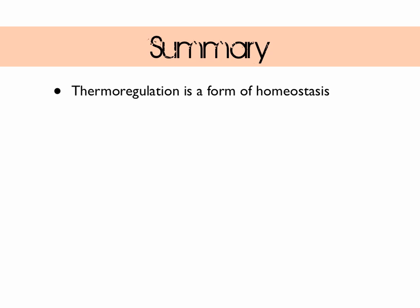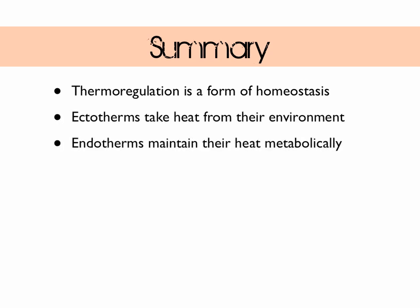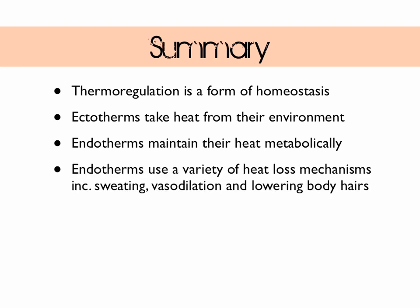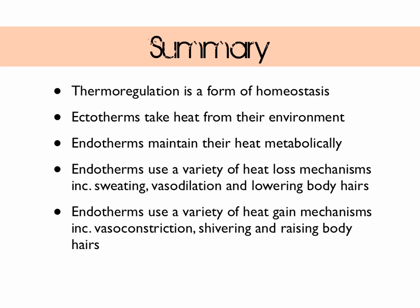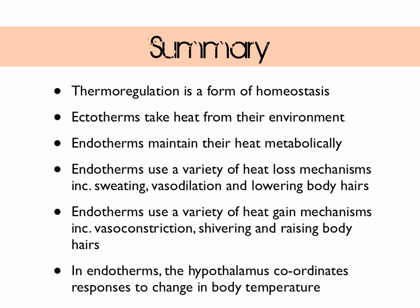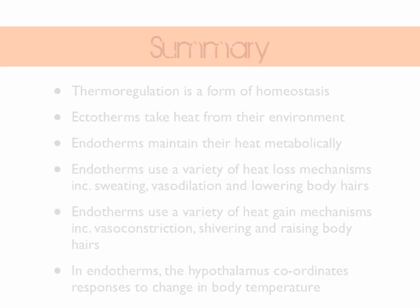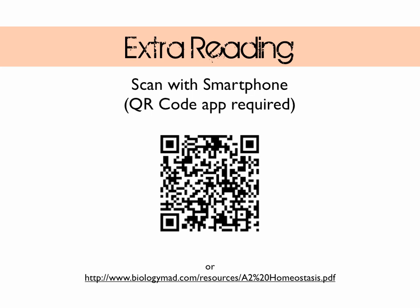Let's summarise. Thermoregulation is a form of homeostasis. Ectotherms take heat from their environment. Endotherms maintain their heat metabolically. Endotherms use a variety of heat loss mechanisms including sweating, vasodilation, and lowering body hairs. Endotherms use a variety of heat gain mechanisms including vasoconstriction, shivering, and raised body hairs. In endotherms, the hypothalamus coordinates responses to changes in body temperature. There's also some extra reading available from Biology Mad.